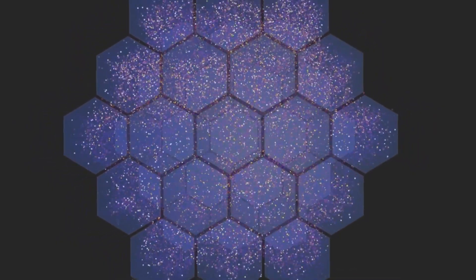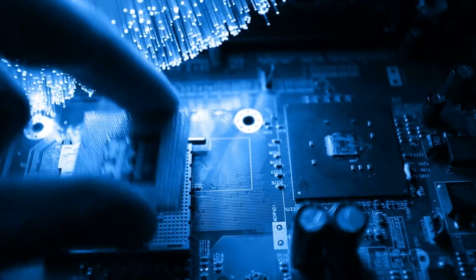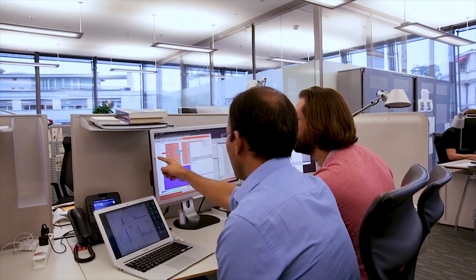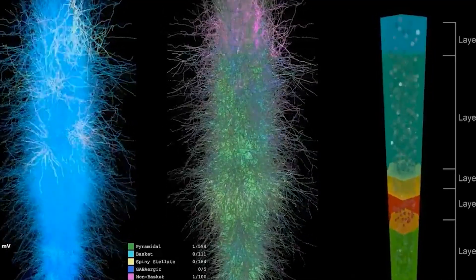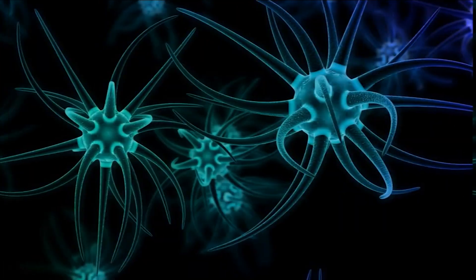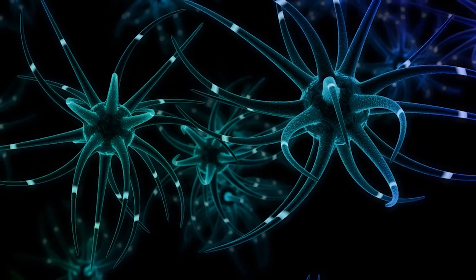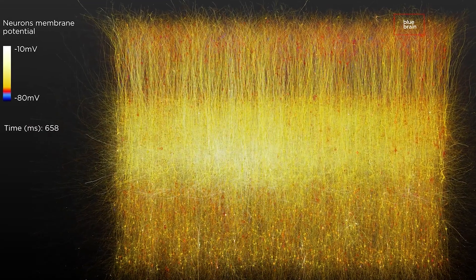But the creation of the model is only the beginning. To truly simulate the brain, the Blue Brain Project needs to make this virtual brain think. The supercomputer mimics the firing of neurons and the exchange of neurotransmitters, creating patterns of thought in the virtual brain.